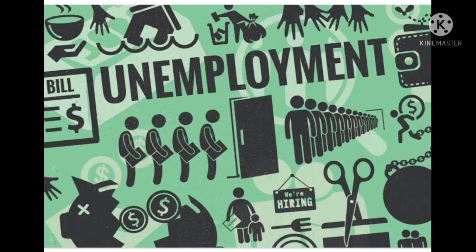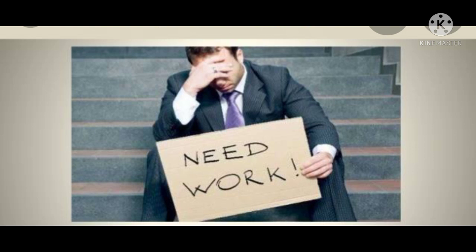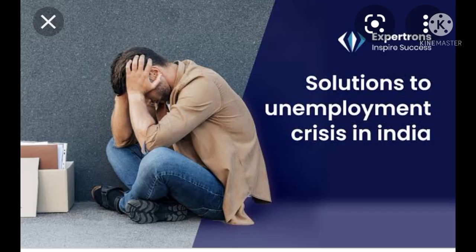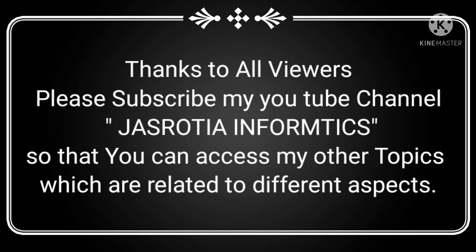Toh yeh sara chapter is tarah se tha - ki kis tarah se unemployment hoti hai, ham ne isme discuss kiya. Kitne tarah ki unemployment hai, toh woh bhi ham ne isme discuss kiya. Iske alawa kya kya reasons rahate hain unemployment ke, toh woh ham ne discuss kiya. Iske alawa aisi kaunsi schemes thi government ki jiske tahat unemployment ko remove kiya ja sake. Iske alawa ham ne baat ki ki aisi kaunsi suggestions ya measures rahenge jiske tahat unemployment ko remove kiya ja sake. Toh exam mein jab bhi aap ko question aayega, toh inhi parameters ko dhyan mein rakhke - ya toh woh causes puchenge ki unemployment ke kya kaaran hain, kya schemes hain, ya kya measures hain taaki country ke andar unemployment ko hum remove kar saken. So this is all about this chapter. Thank you.